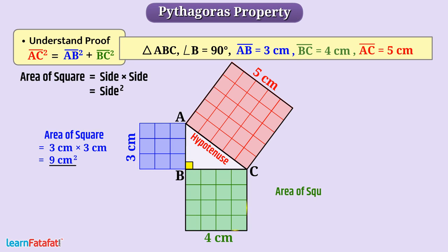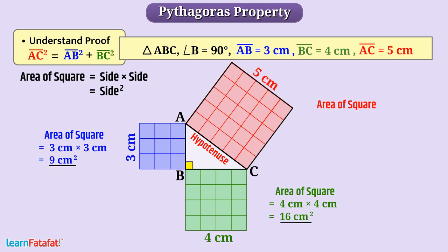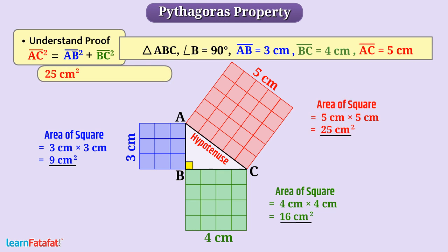Similarly, area of square with side 4 cm is 4 cm multiplied by 4 cm, that is 16 square cm. And area of square with side 5 cm is 5 cm multiplied by 5 cm, equal to 25 square cm. Here, 25 square cm is equal to 9 square cm plus 16 square cm.